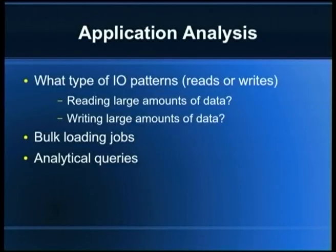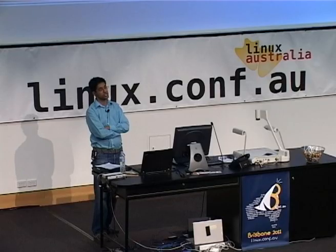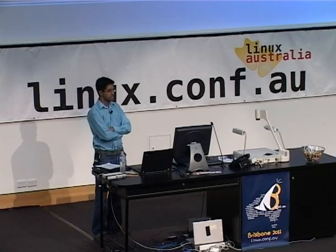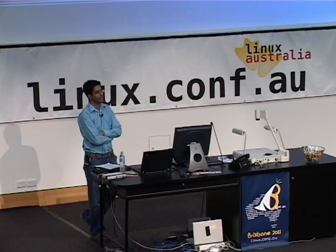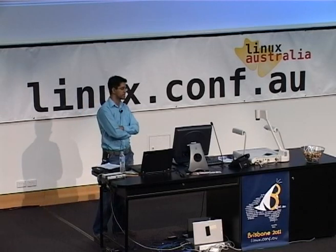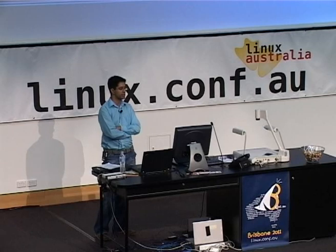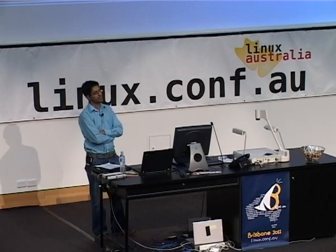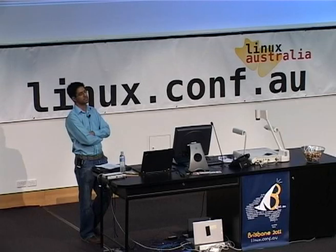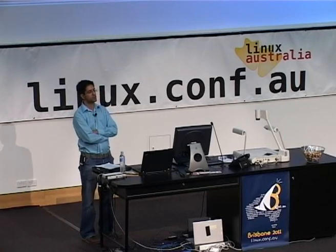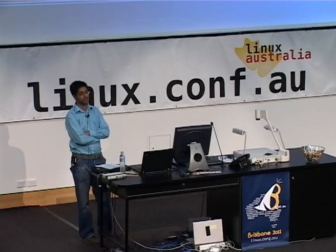Starting with application analysis, the first thing you look at is how the application is interacting with the database — whether it's reading large amounts of data, writing large amounts of data, if you're using any ETL jobs, or analytical queries. These all really matter because when you're tuning your Postgres server or conf file, you need to think about all these things before you set up those values.